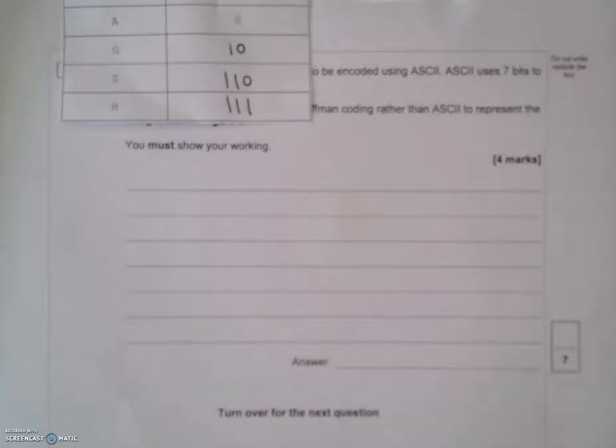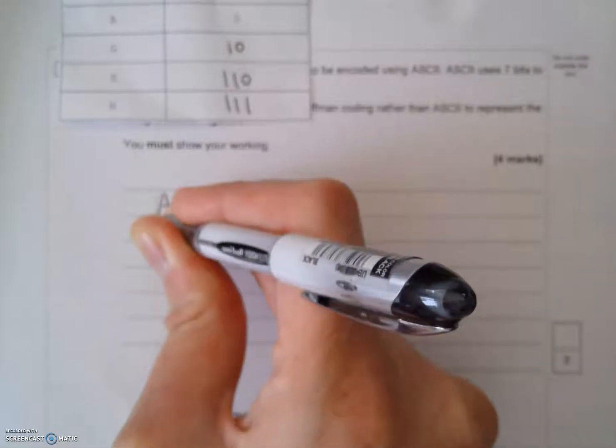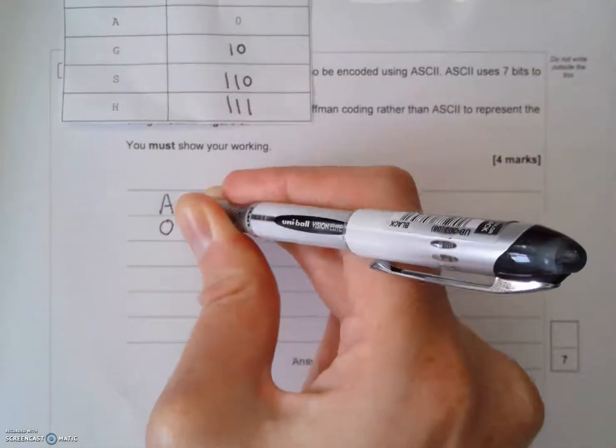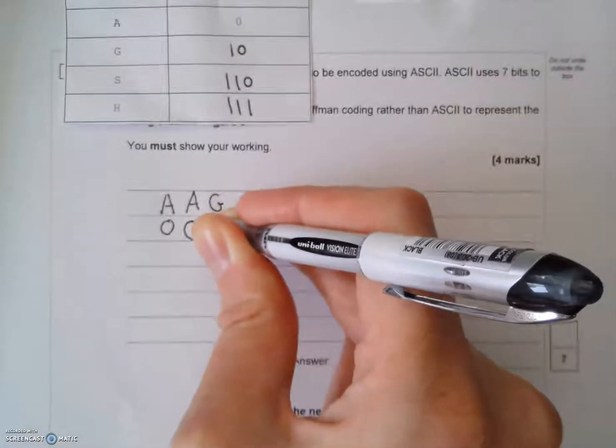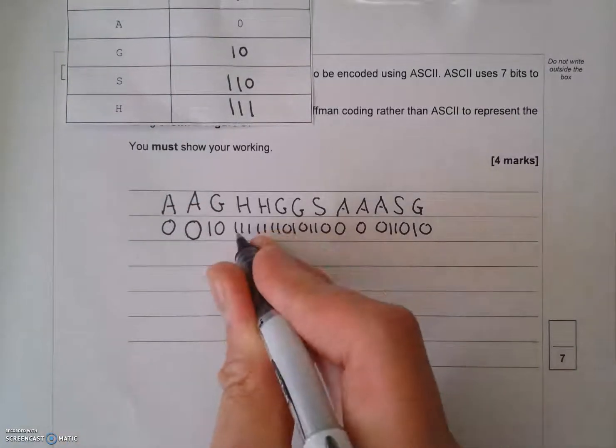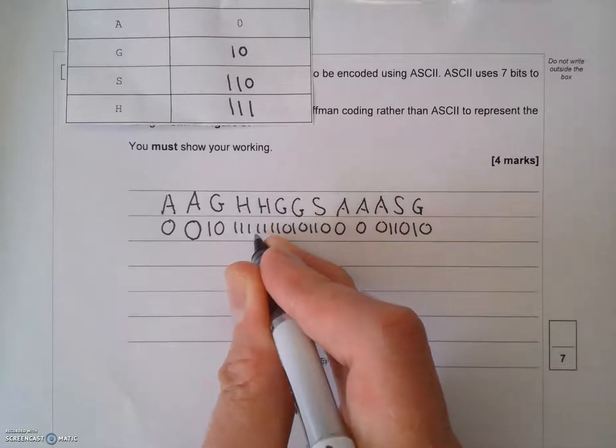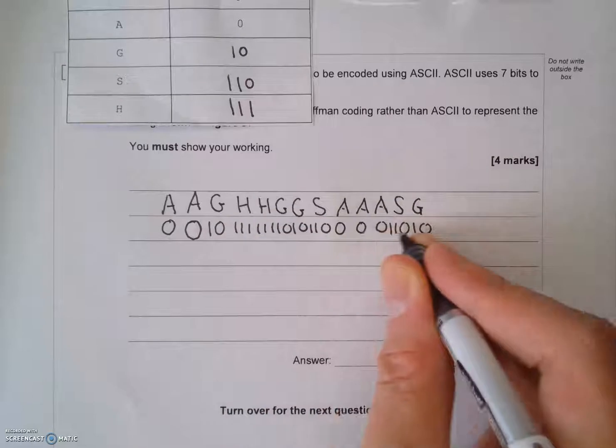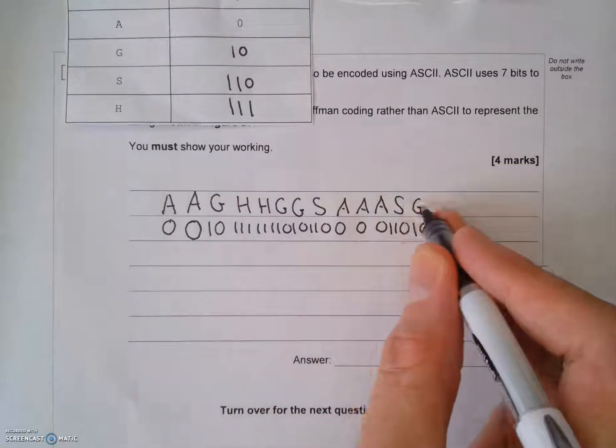So what I need to do is write down the string and then write down the ones and zeros used in that string. So, I'm going to start with, I'm just going to write this out. So, A is 0. A is 0. G is 1, 0. So, now you can see I've written out the whole string and then all the ones and zeros that represent that. So, I've got H in there, which is 1, 1, 1, and I've written all my ones and zeros out like that very carefully. What I'd recommend you do it this way and you leave some spaces between these characters so you can write your ones and zeros.